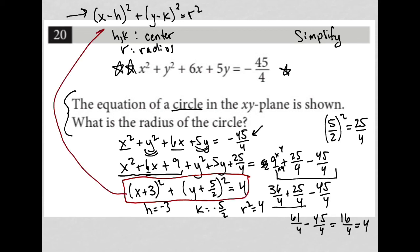And if r² is equal to 4, then I can square root both sides of that equation and now I know that r is equal to 2. So the radius of the circle must equal 2, that is the answer.